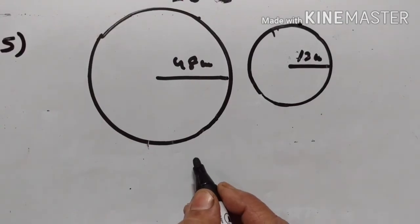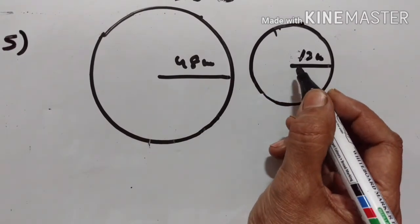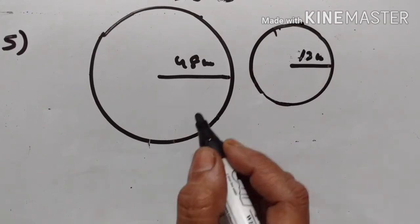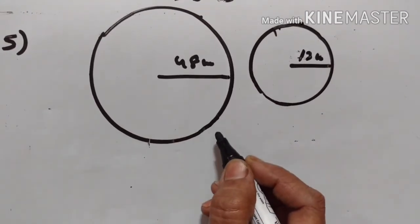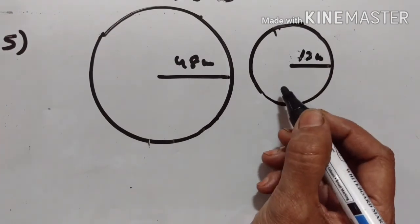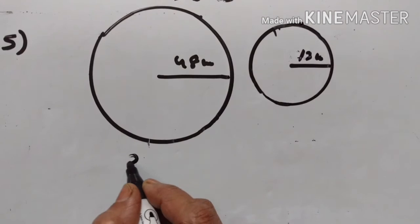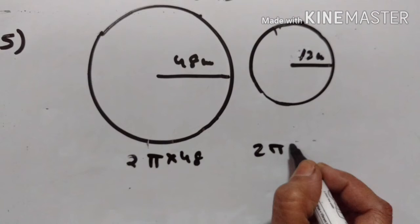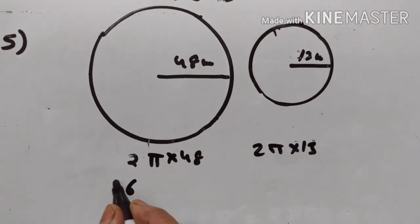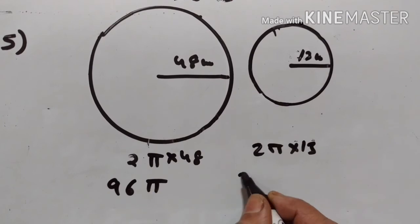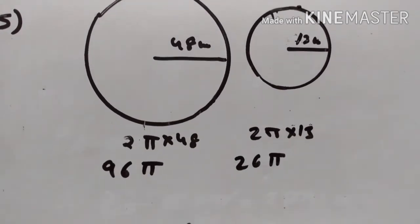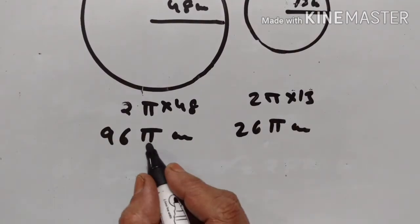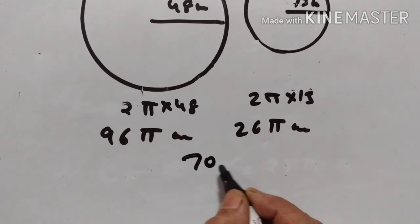Fifth problem. The radii of two circles are 48 cm and 13 cm. Find the area of the circle whose circumference equals the difference of the circumferences of the two given circles. The circumference of the first is 2π × 48 = 96π, and the second is 2π × 13 = 26π centimeters. The difference of the circumferences is 70π centimeters.